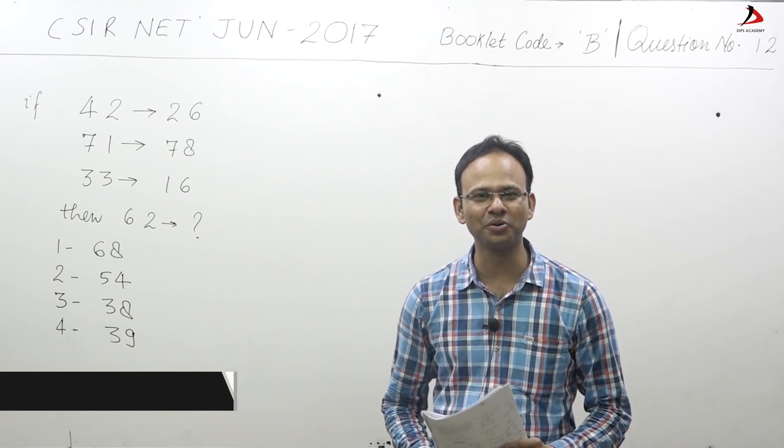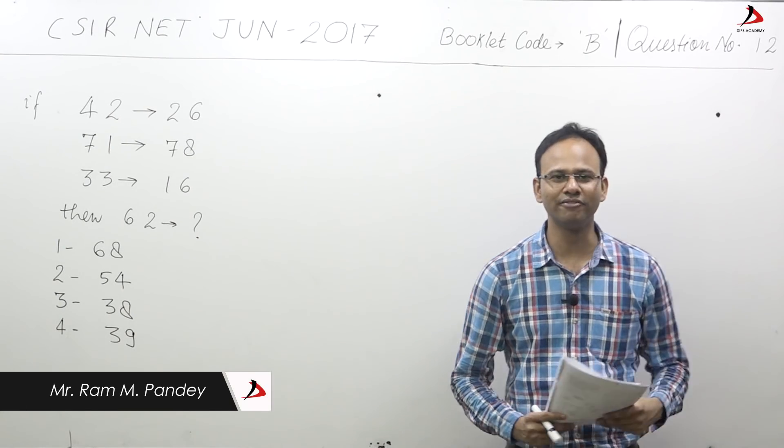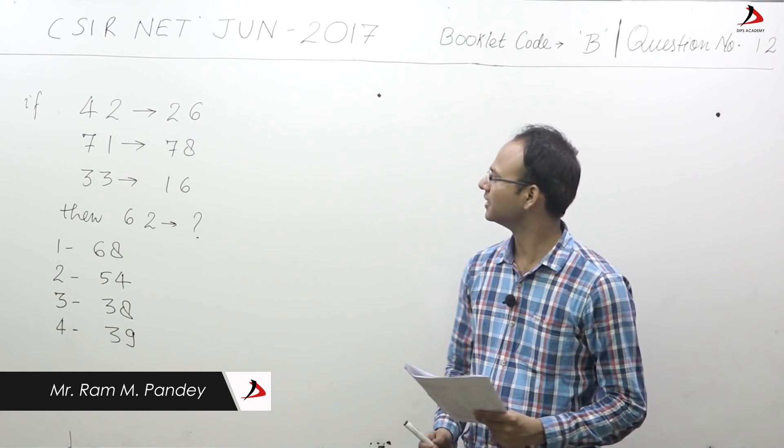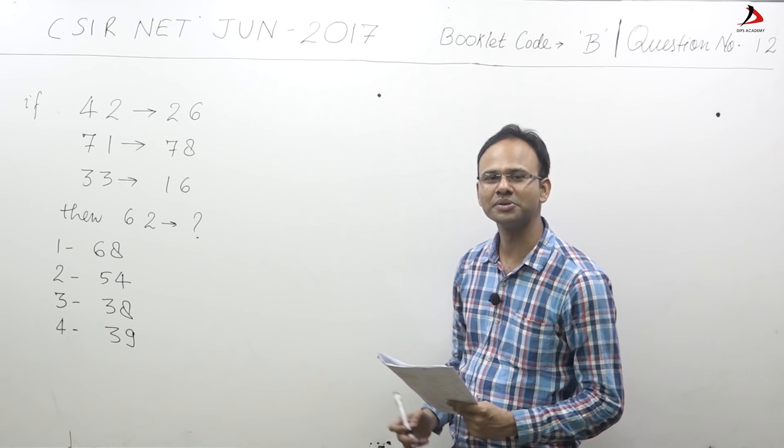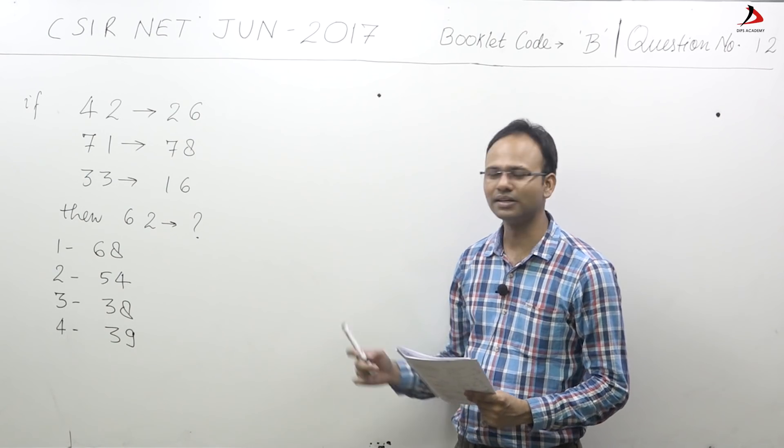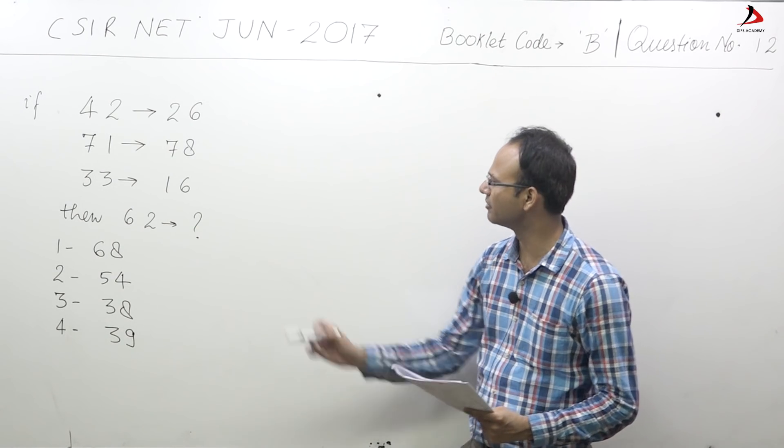Hello everyone, this is booklet code B, question number 12 of part A. The question says if 42 equals 26, 71 equals 78, and 33 equals 16, then what will be the value of 62?